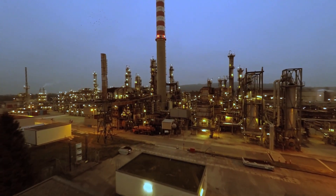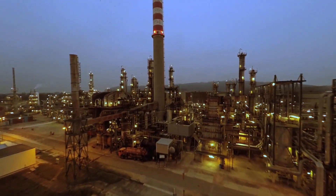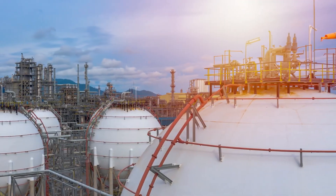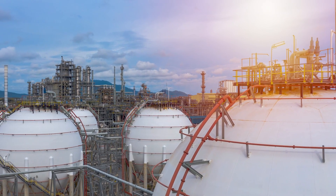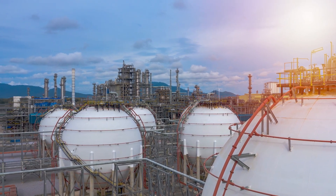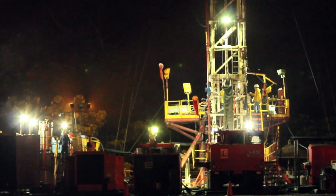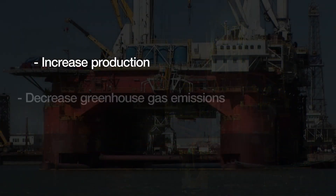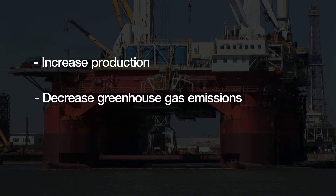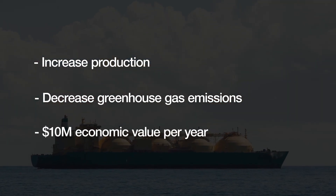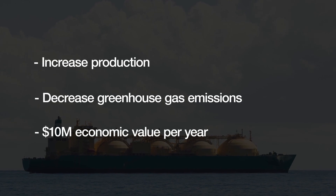While extendable to any process manufacturing operation, in this example BHC3 Process Optimization is configured for the main heat exchanger at an LNG facility. With BHC3 Process Optimization, the LNG plant can increase production output, decrease greenhouse gas emissions per barrel of oil equivalent produced, and unlock up to $10 million in annual economic value for every LNG train.